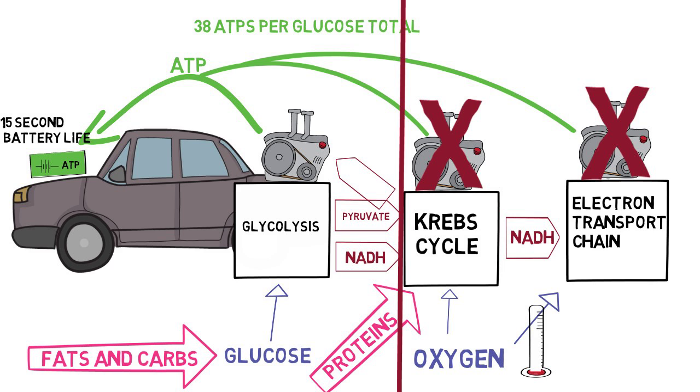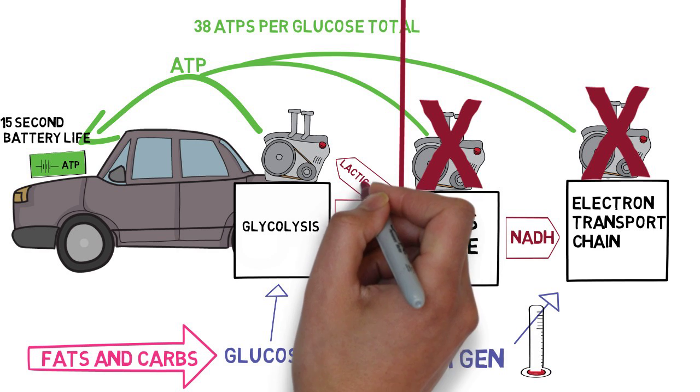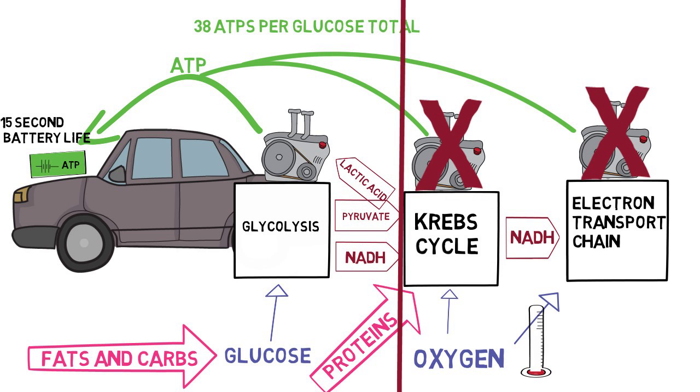When the byproducts aren't being used by the other two generators, your cells need to get rid of them quickly, so they turn them into something you have probably heard of before: lactic acid. As the lactic acid builds up, it eventually becomes too detrimental and the last remaining generator is forced to stop producing ATP, and your car—body—stops.